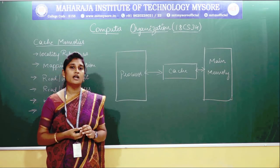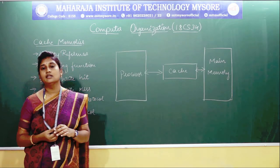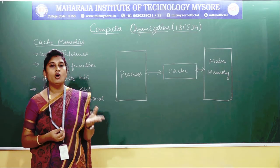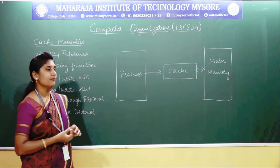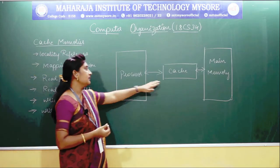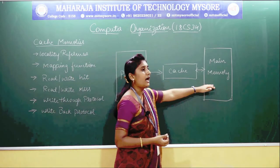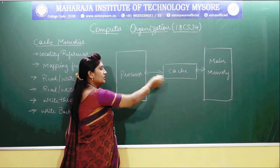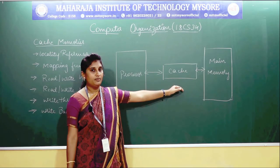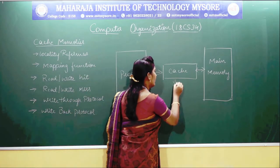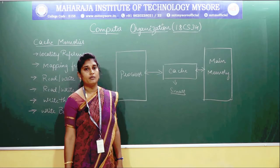Before learning about access time reduction, we shall know how cache memories are placed in your processor. The cache will be placed between the main memory and the processor. Between the processor and the main memory, your cache memory will be placed, and the cache memory will be small comparatively to your main memory.